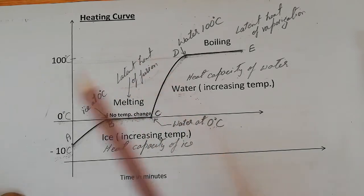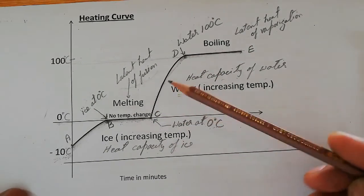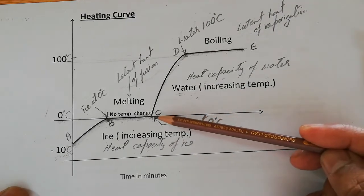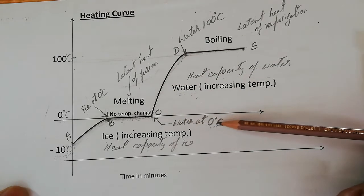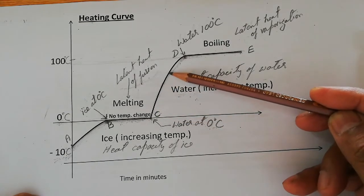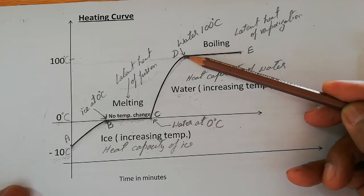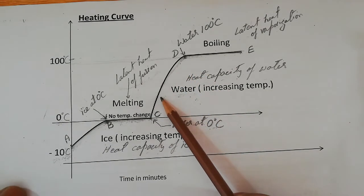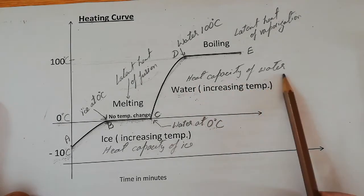This formula will be applied for the latent heat of fusion of ice. Afterwards, from C to D, the water which is at zero degrees Celsius will gain heat. That heat will be absorbed by the water to increase its temperature. Initially this water was at zero degrees Celsius, but after absorbing heat its temperature will gradually increase, and when the temperature reaches 100 degrees Celsius, the water will start boiling. The heat absorbed can be calculated with the formula for heat capacity of water.